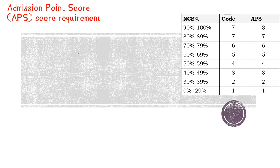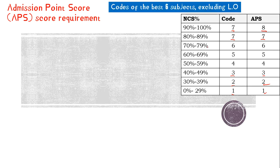For most universities, calculating the APS score is straightforward — they simply use your code. If you get a code 1, you get one point; code 2, two points; code 3, three points, and so forth. If you get a code 7, you get seven points. But if you get an A+, in other words from 90 to 100, it is still code 7 but you receive eight points, which is the maximum. Your best six subjects are added, excluding Life Orientation (LO), which is not included in the APS calculation.